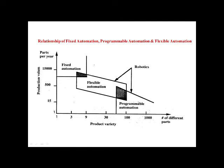In this graph, you can observe the relationship between fixed automation, programmable automation, and flexible automation. The x-axis shows product variety and the y-axis shows production volume. Programmable automation is suitable for low production volume and high product variety — when product variety increases, production volume automatically decreases. Flexible automation is a combination of programmable automation and fixed automation, incorporating features of both technologies.